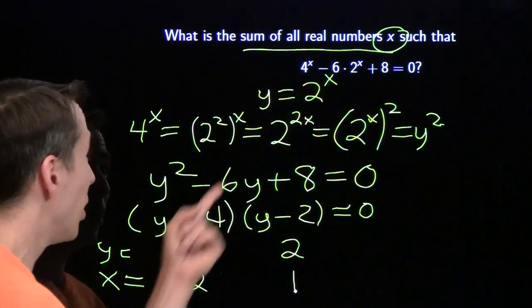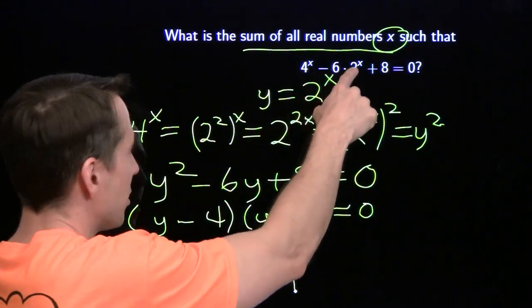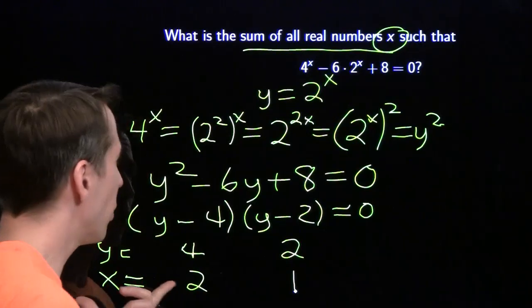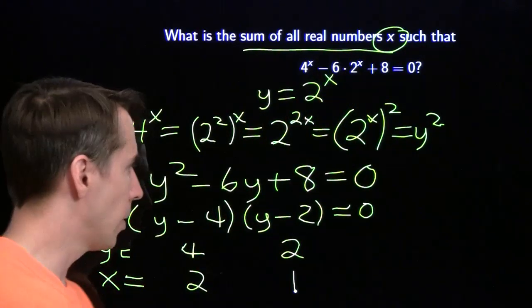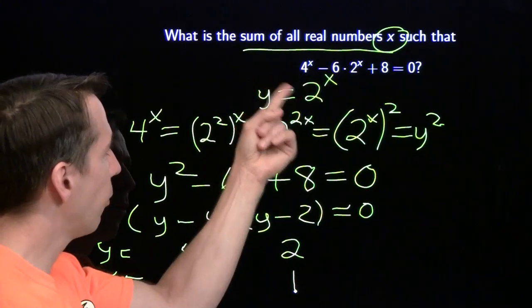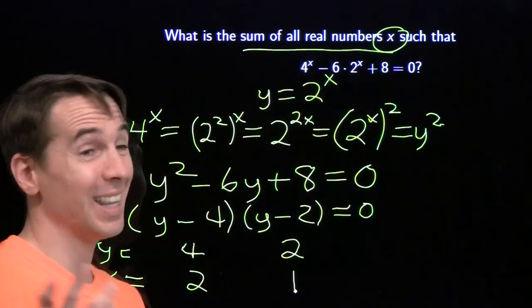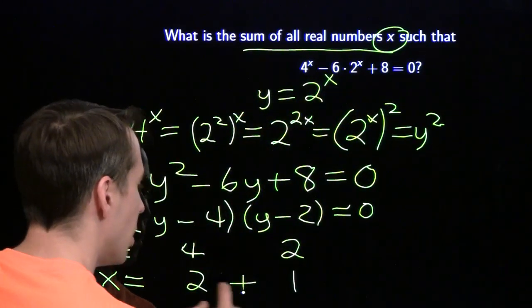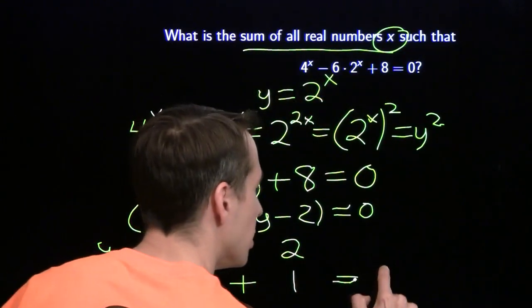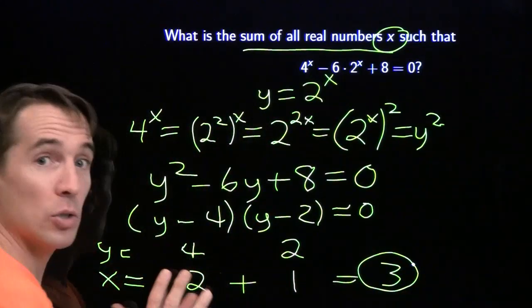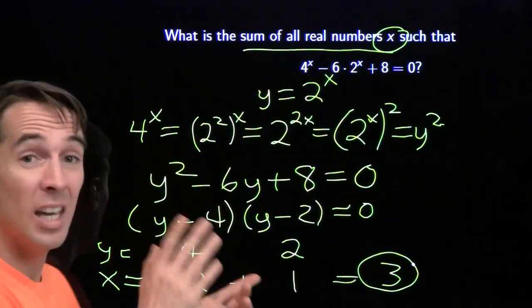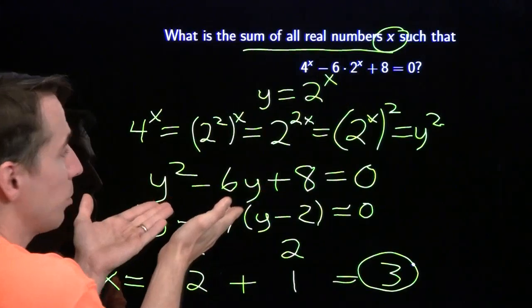So let's check and make sure we got this all down. We'll put the 2 back up here. 4 squared is 16, minus 6 times 4 is 24, so 16 minus 24 plus 8 is 0. I'll try 1 up here, 4 minus 12 plus 8, that's 0 as well. So the sum of all real numbers x that satisfy this equation is 3. And there's our second strategy for tackling these things. That's substitution for simplification.